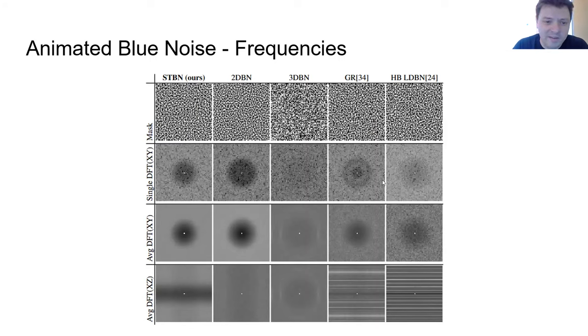And so what that means is that each frame renders 2D blue noise, which is nice for perception and Gaussian filtering and all that. However, each pixel individually over the Z axis is also blue noise, and that's better for convergence, which I'll show in a minute. Only our noise has both of those properties.